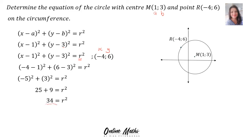Don't take the square root — you want r squared. Therefore the equation for the circle is x minus 1 squared plus y minus 3 squared is equal to 34.